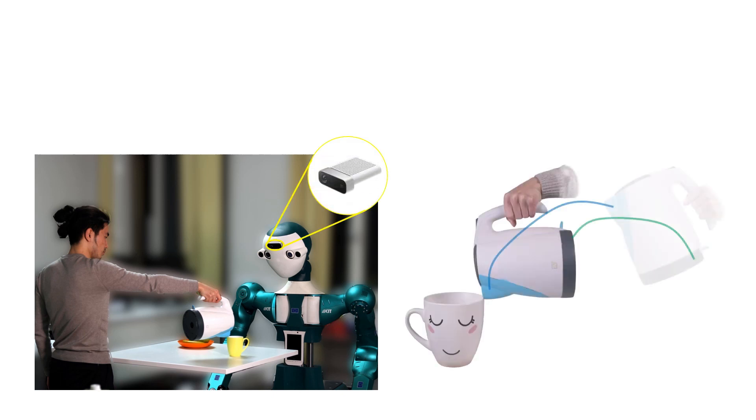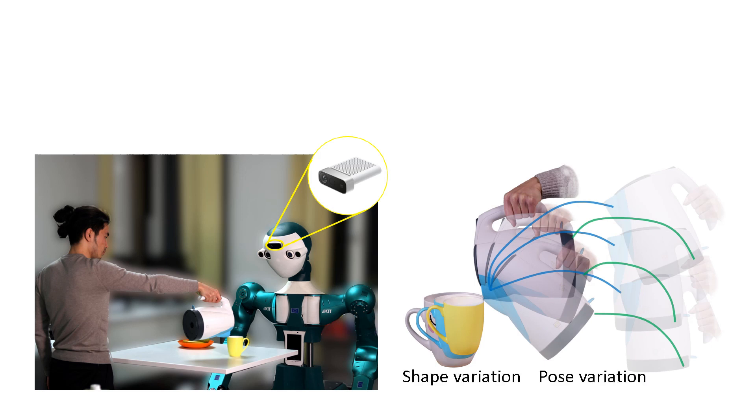In this paper, we provide human demonstration videos recorded from a third-person perspective using an RGB-D camera. For example, in pouring demonstration videos, we observe variations in object shape, pose, and trajectories. We then represent the functional parts of the kettle by keypoints and describe their motions and geometric constraints in the local frames of the cup.